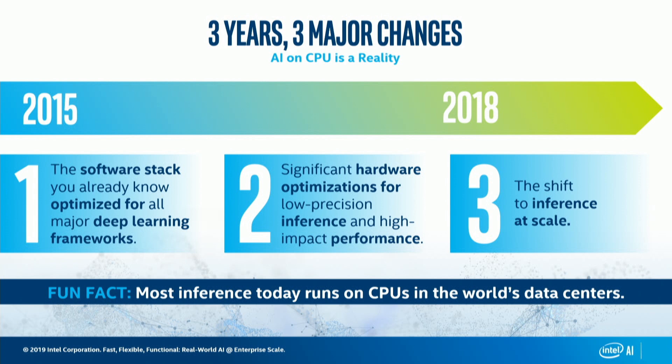If you look, for example, the second generation Xeon scalable processors, which were launched earlier this year, are including hardware acceleration that gives you 10x, 14x, depending on the usage, compared to previous generations.